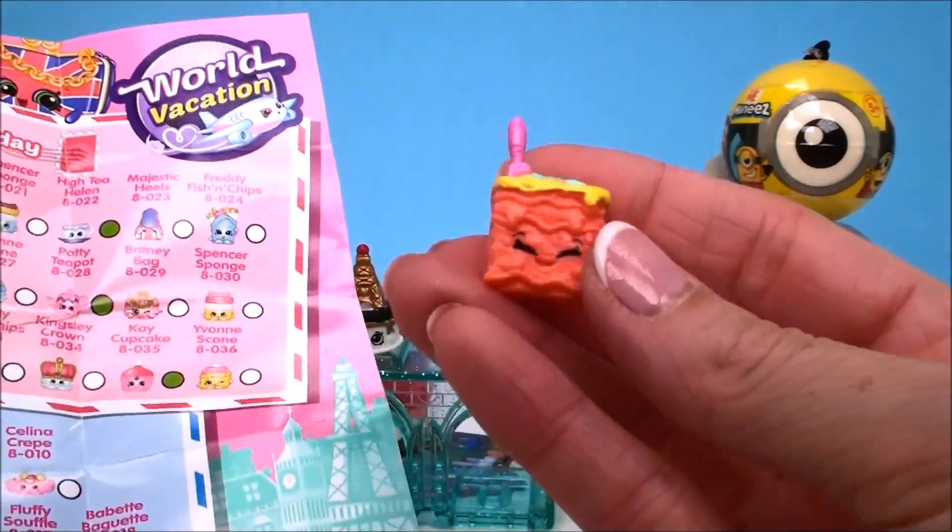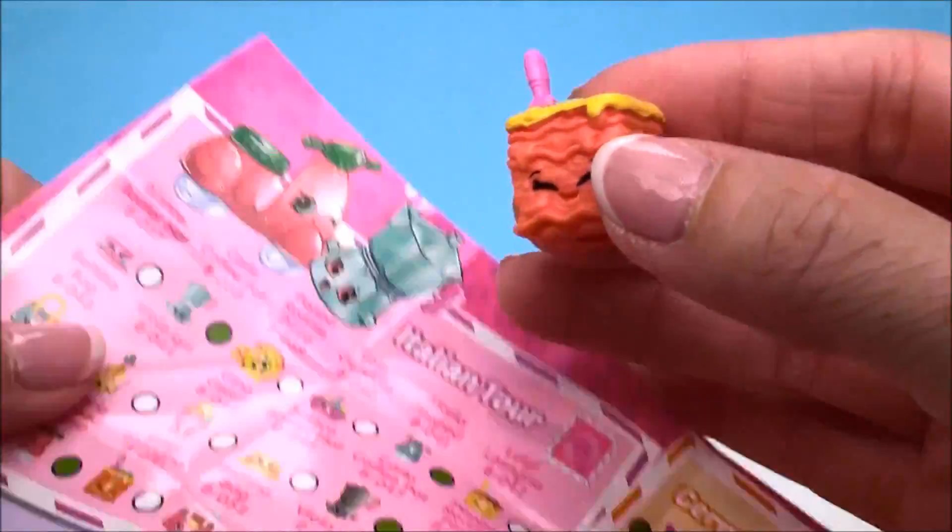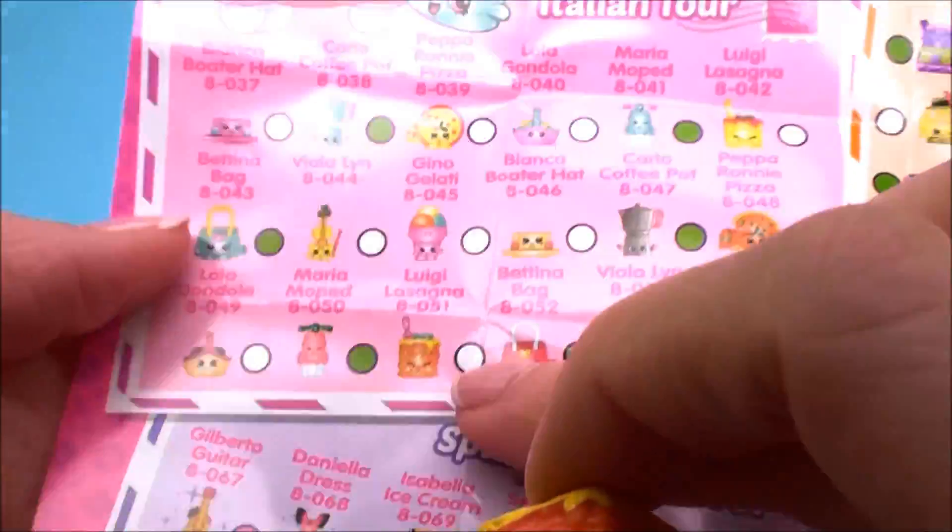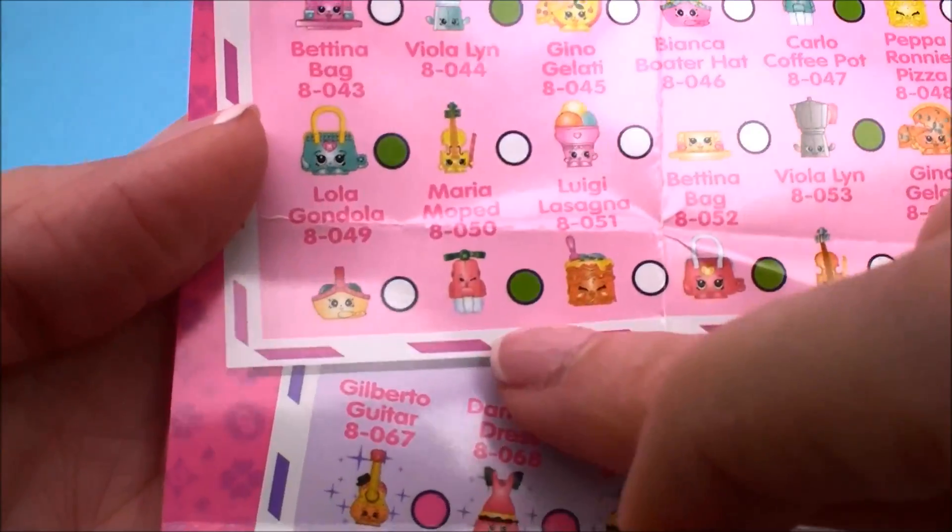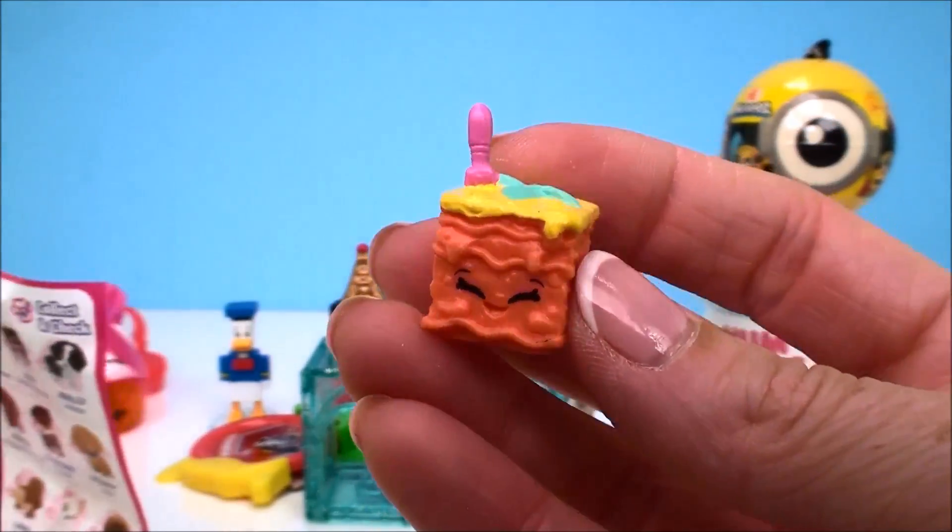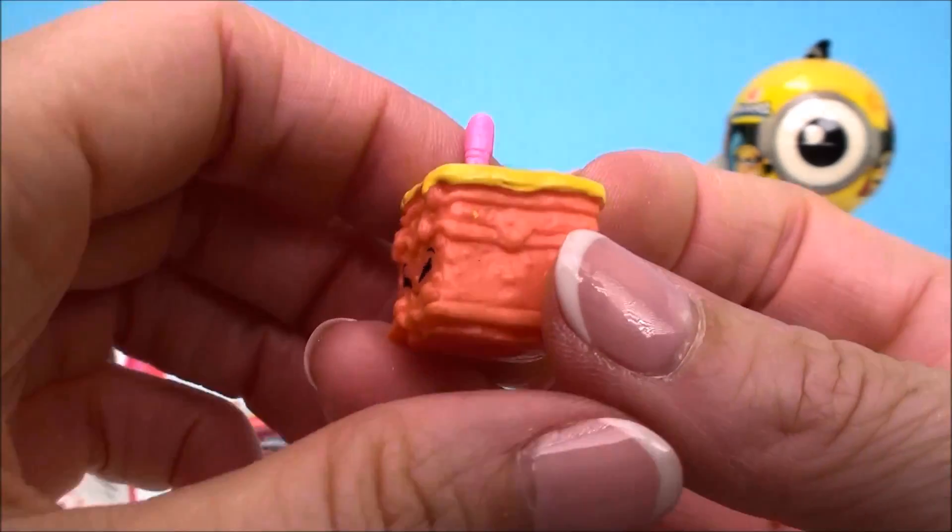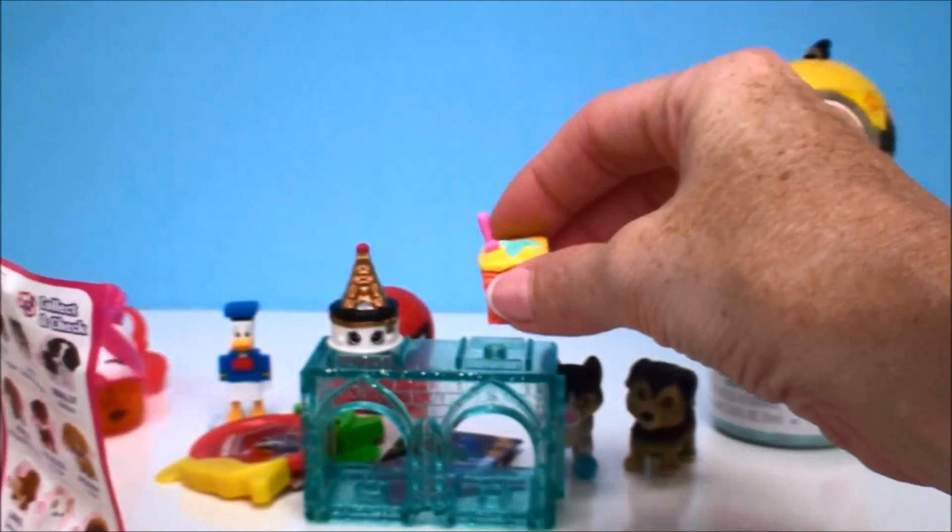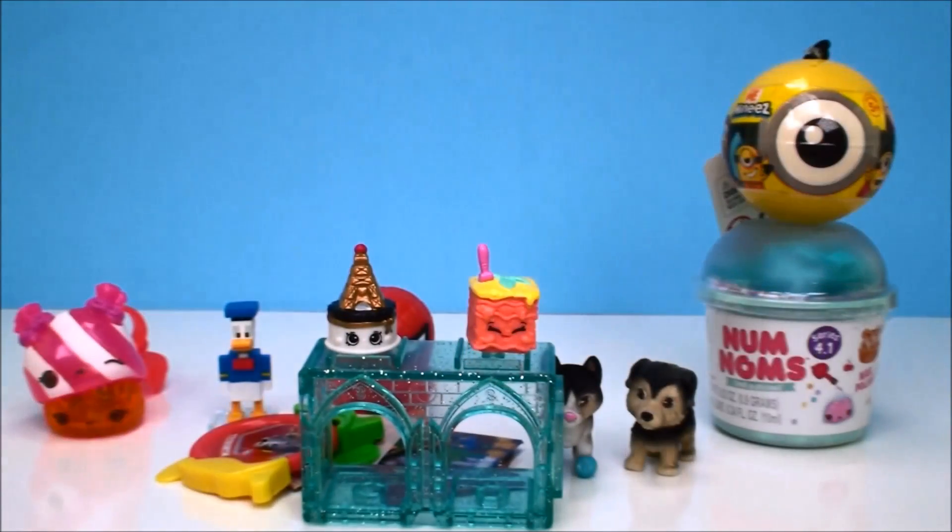And now where is this one from? This one is new to me. Okay. So okay, here it is right here. This is Luigi Lasagna from Italian Tour and has a little green circle. So that means that this is a rare shopkin from this season. Super cute. I didn't think that was lasagna, but apparently it is. Alright, very cool.